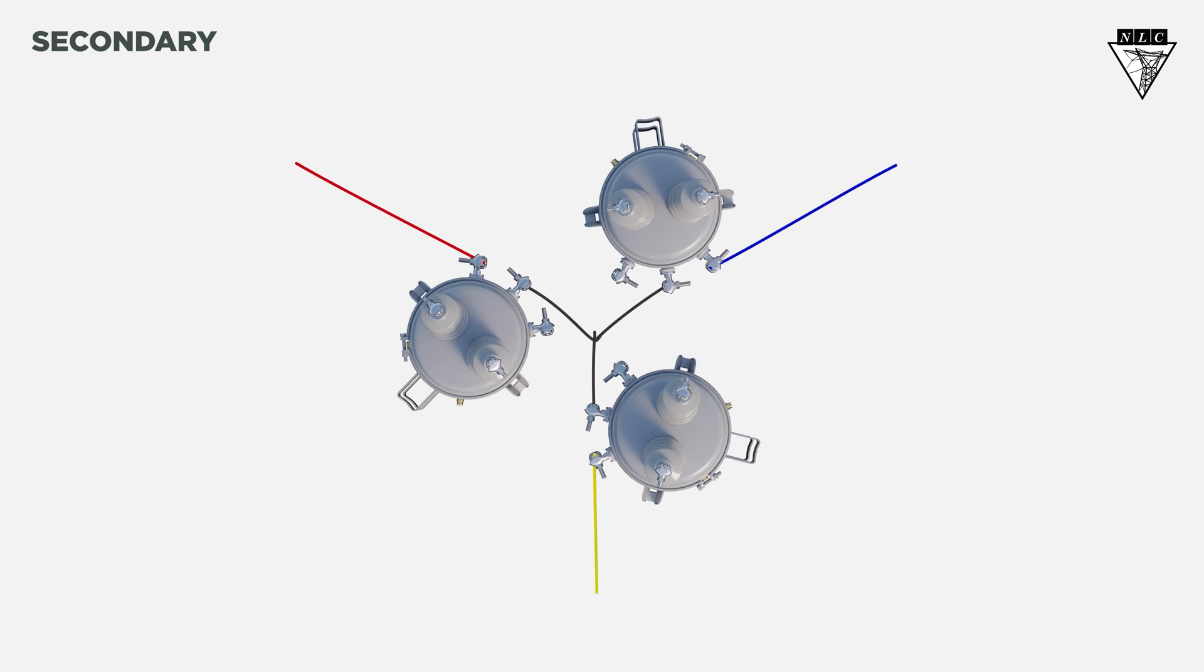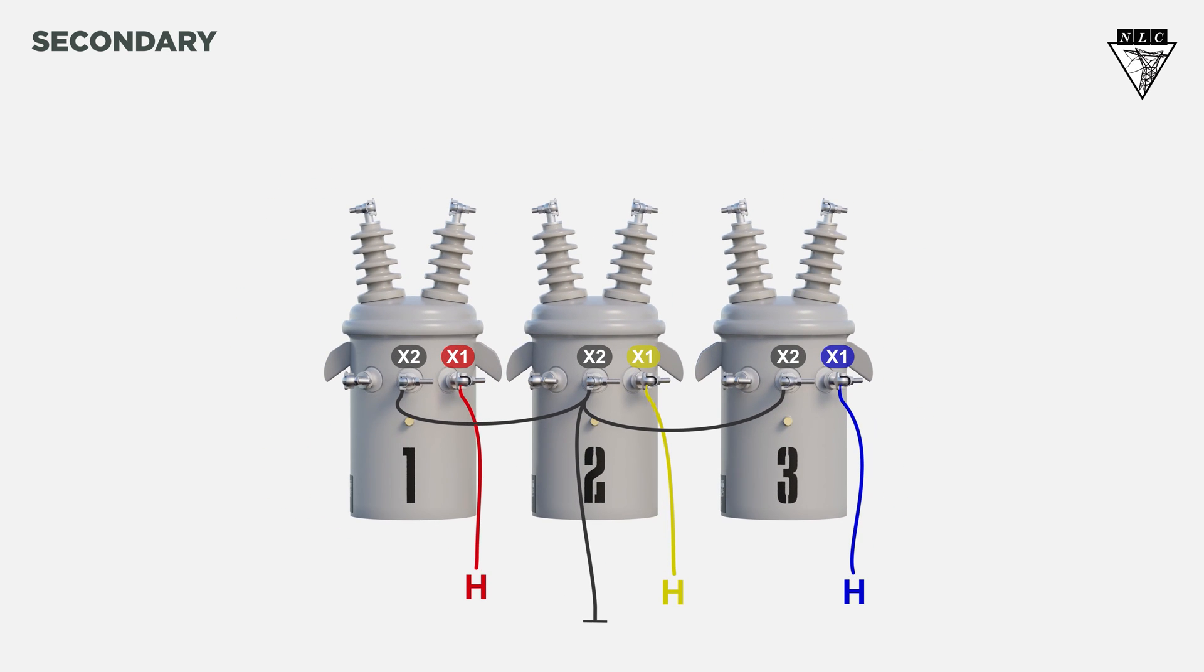Now, let's see the connections from the front view. We're only using two secondary bushings, while the third bushing remains idle.